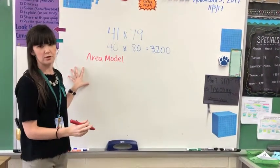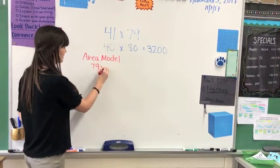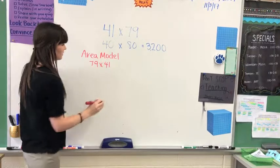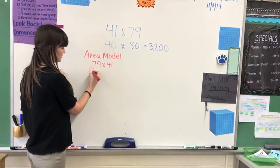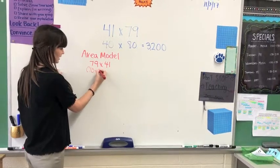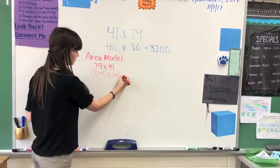When we do an area model, what we'd like to have is, let me just write our problem, we'd like to break up our numbers. We can break this up into expanded form. 70 plus 9 times 40 plus 1.